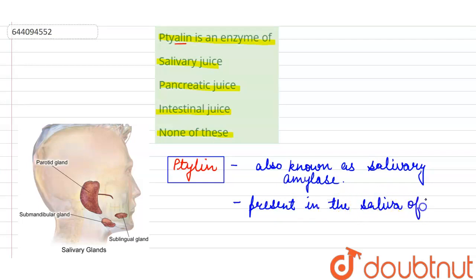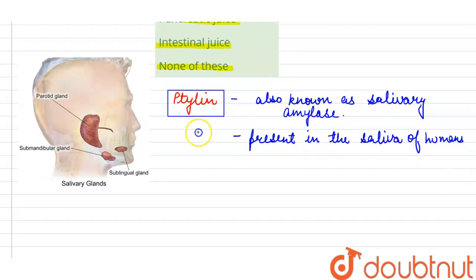Now what is the function of ptyalin? It gets activated by chloride ions present in the saliva and acts on the dietary starch to break it down into simpler molecules. Inactive form of ptyalin activates with the help of chloride ions.